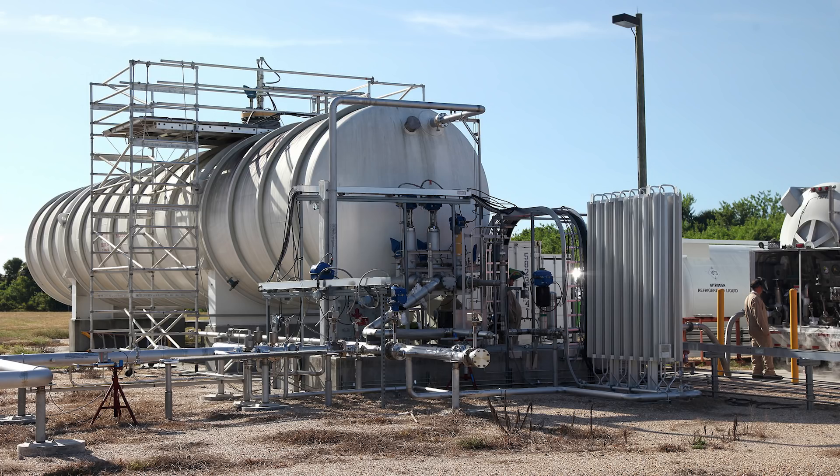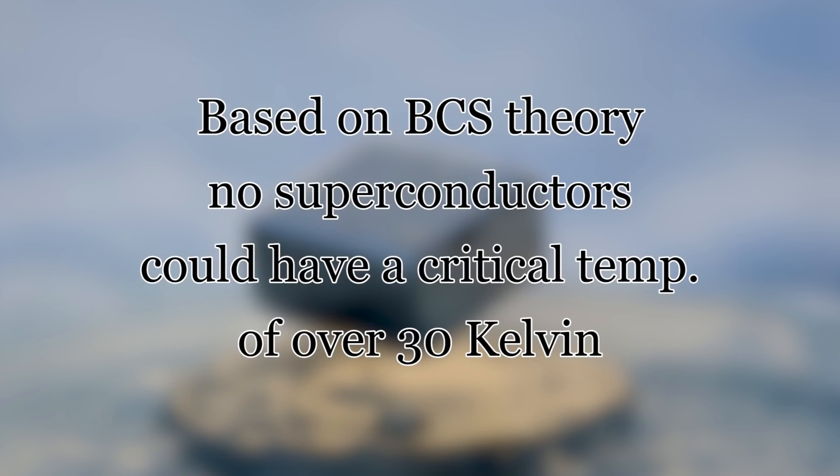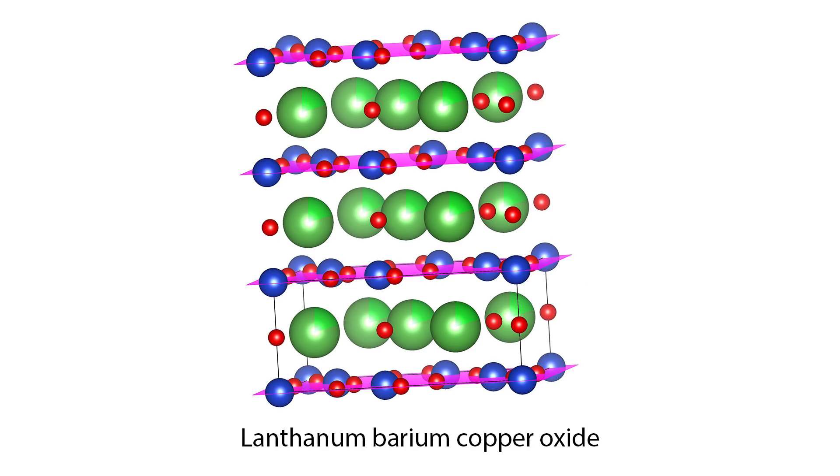At the time, superconductivity was extremely difficult to study, because liquid hydrogen or helium, not available in high supply, were usually required to cool metals to their critical temperatures. Scientists had speculated that, by BCS theory, no superconductors could exist that would have critical temperatures above 30 Kelvin, and the highest known critical temperature at the time was 23 Kelvin for a niobium-germanium alloy.